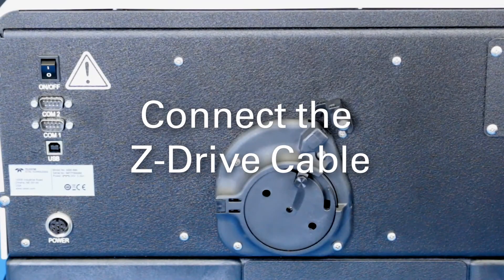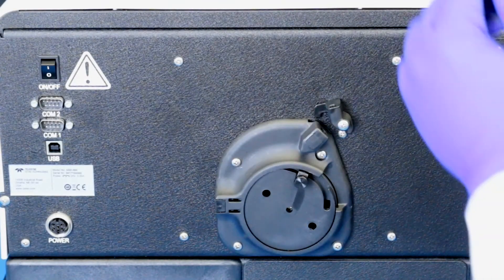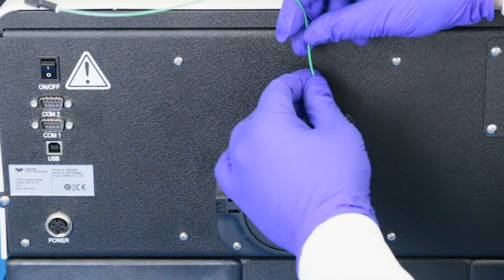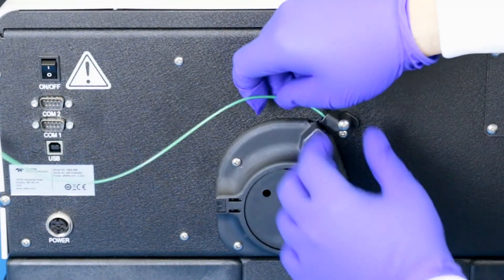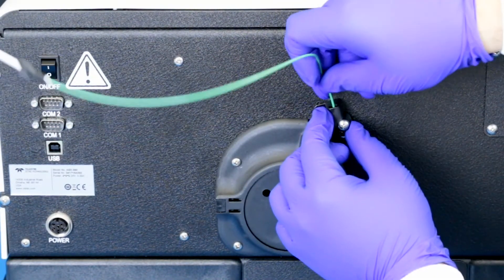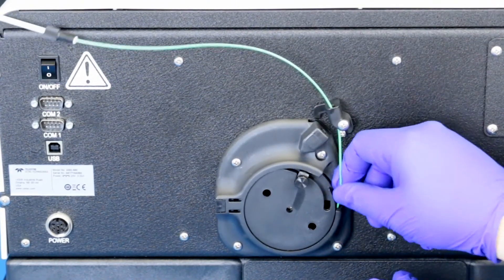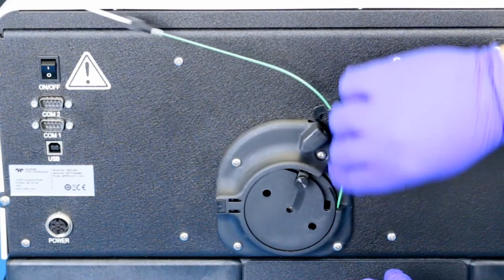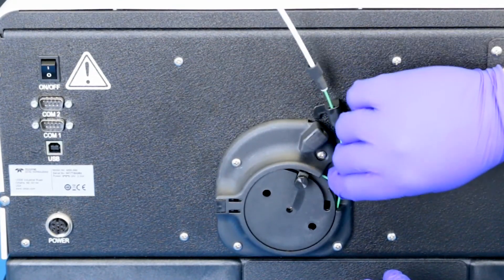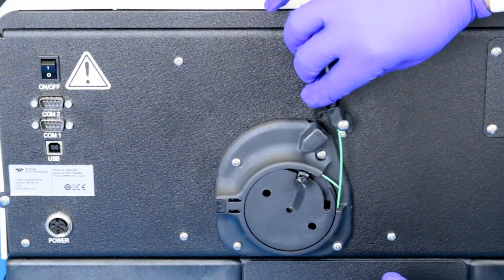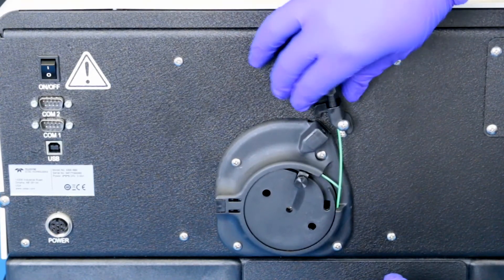Connect the Z-Drive cable. Feed the cable through the rear guide block and around the rotor. Tighten the nut to secure the cable sleeve to the guide block.